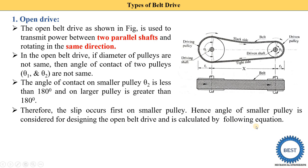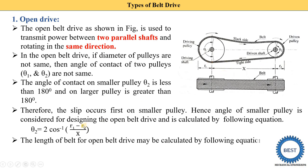Therefore slip occurs first on the smaller pulley. Hence the angle of contact of the smaller pulley is considered for designing the open belt drive. Slip means the driving shaft rotates but the belt does not rotate — slip always occurs on the pulley with the smaller angle of contact. When designing the open belt drive we design on the basis of theta 2. Theta 2 is found using the equation: theta 2 = 2 × cos⁻¹((R1 − R2) / X), where R1 is the radius of the driving pulley, R2 is the radius of the driven pulley, and X is the center distance between the two pulleys.